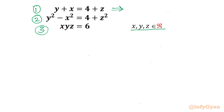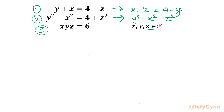I can write equation 1 as x minus z equal to 4 minus y. For the second equation, I will take all the variables to one side, so y squared minus x squared minus z squared equals 4. Now I will consider squaring both sides of the first equation, x minus z equal to 4 minus y.